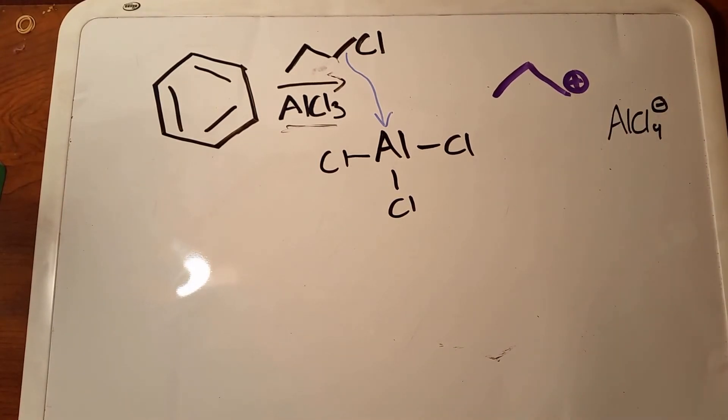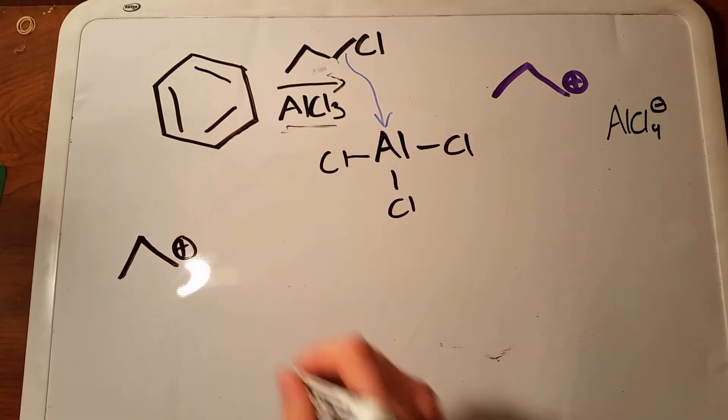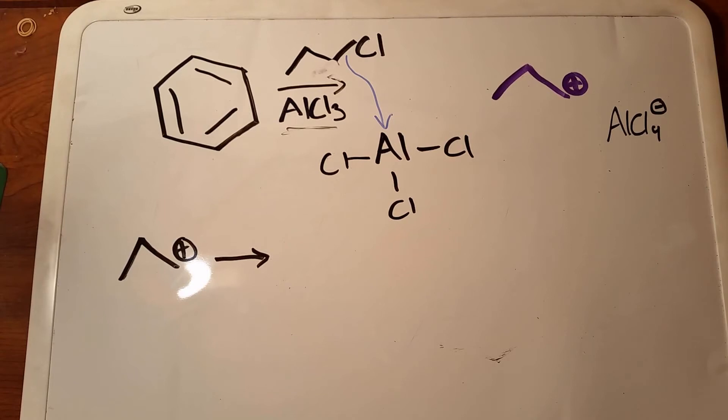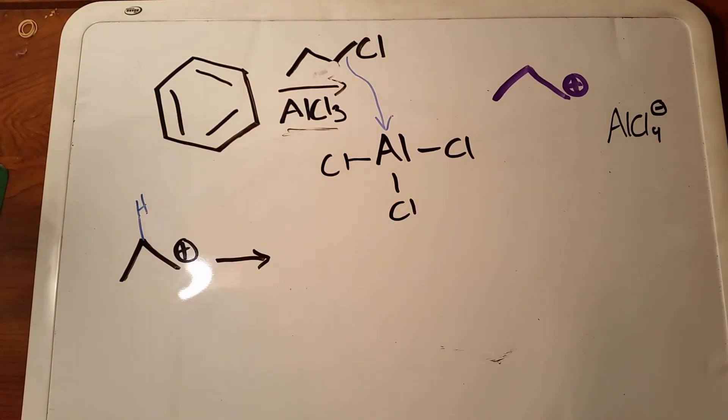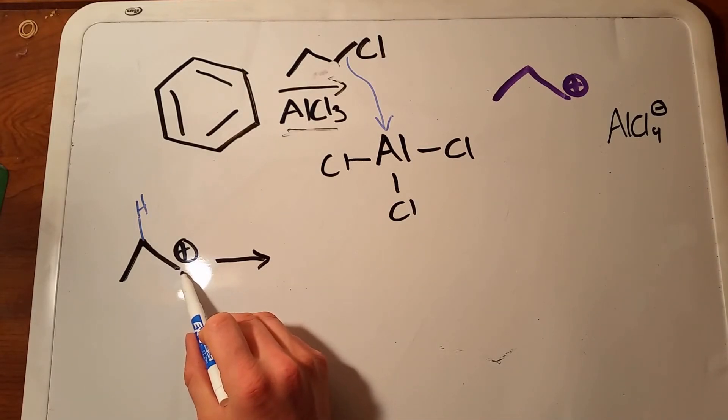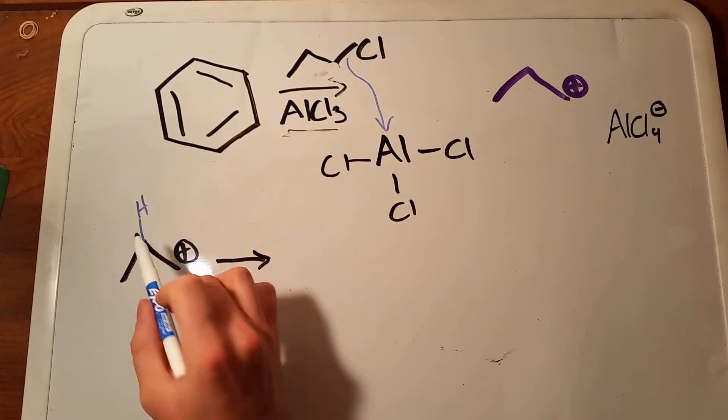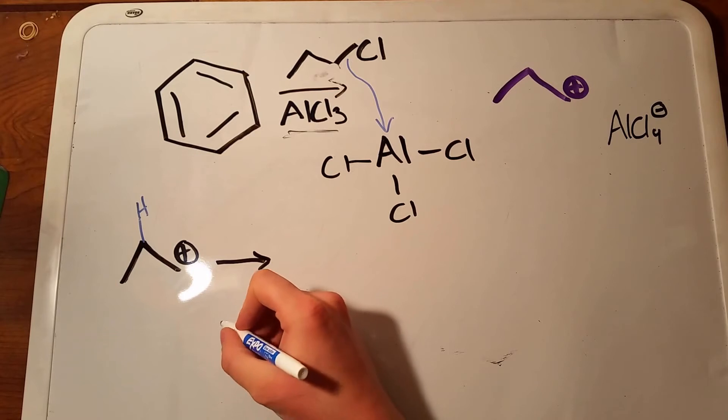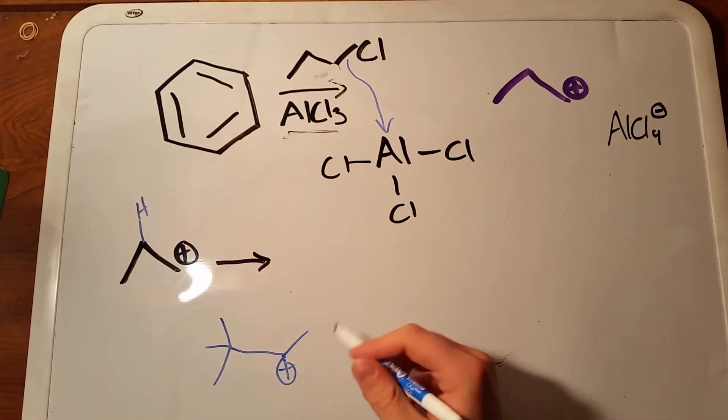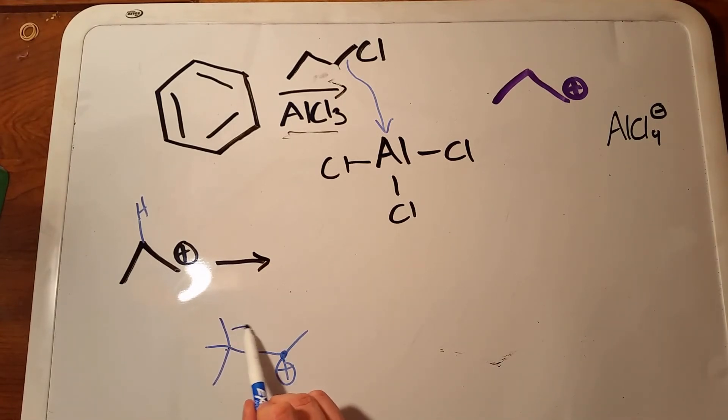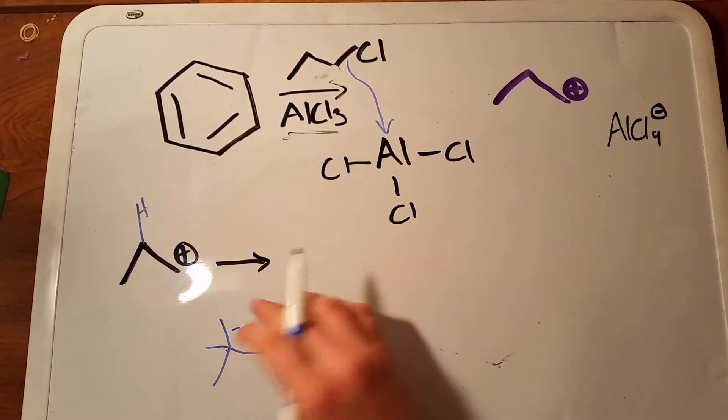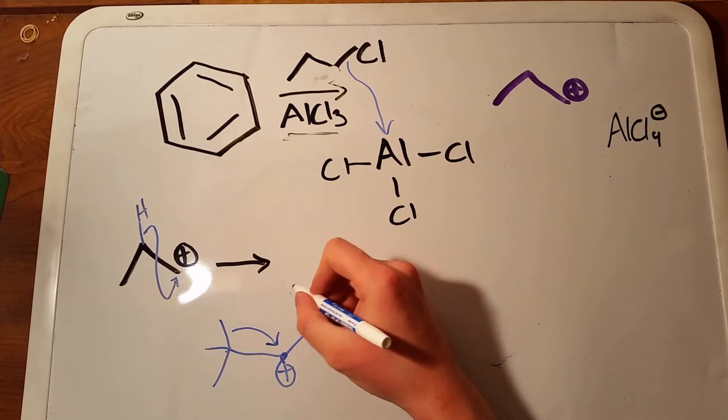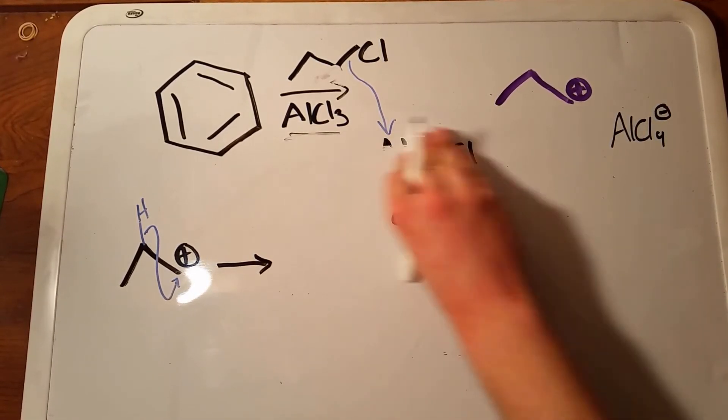If you remember what we learned in Orgo 1, carbocations aren't particularly stable and will always look to make themselves more stable if they can. And the only option it has for that right now is something called a hydride shift. If you ever see a carbocation and it is next to a higher degree carbon, for example here we have a primary and right next door is a secondary, you're going to do a hydride or a methyl shift. And the only time you ever do a methyl shift is if there are no hydrogens to shift. For example, if I had a carbocation that looked like this, well this is a secondary carbon next to a quaternary carbon, there are no hydrogens to move so the methyl would shift. But that isn't the case in this example. In this example, it's the hydrogen that will move. And we show that by showing the bond of the carbon-hydrogen going to where the positive is.